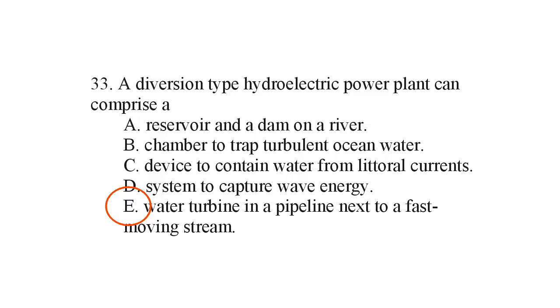We can look at the other choices. A, a reservoir and a dam on a river. That is an impoundment type hydroelectric power plant because the dam impounds the water into the reservoir and it's released from there through a penstock which drives a water turbine.